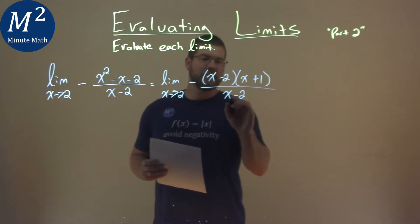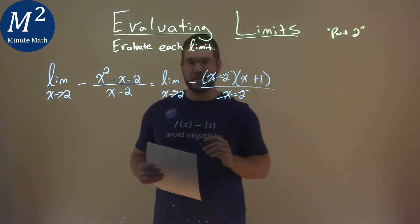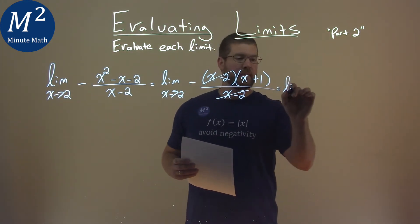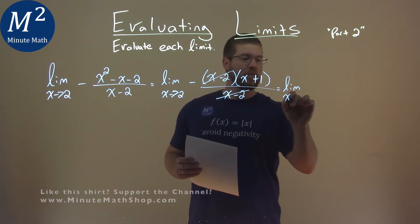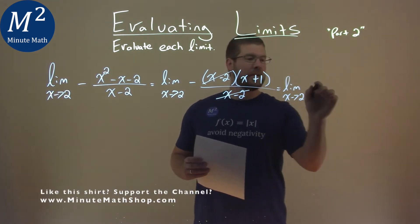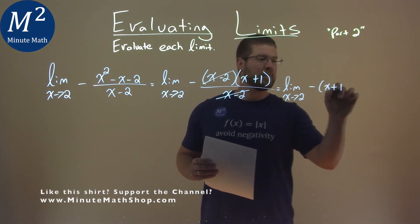Now, from here, we see x minus 2's cancel. So, we're left with, now, the limit as x approaches 2 of negative x plus 1.